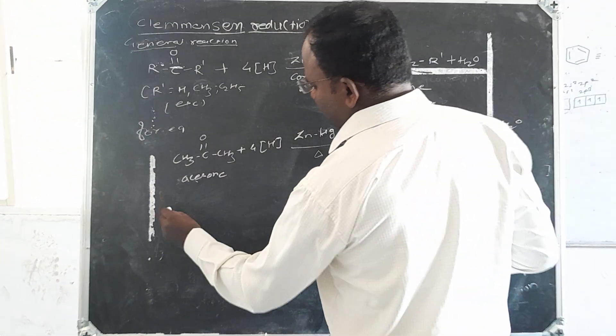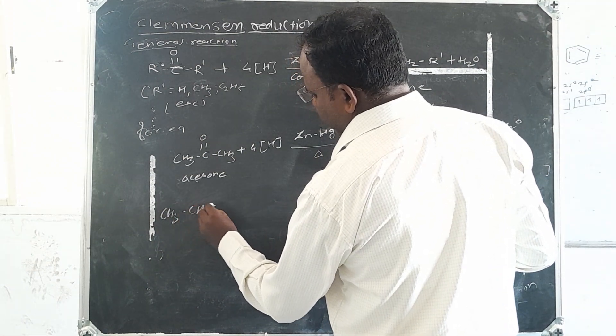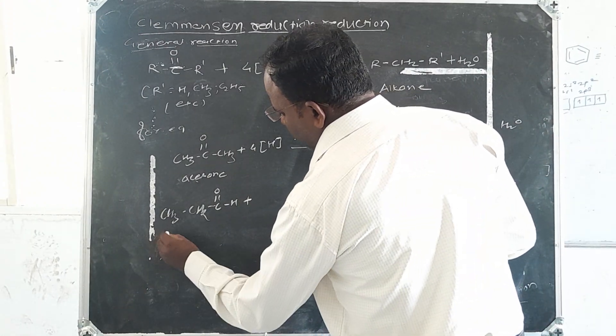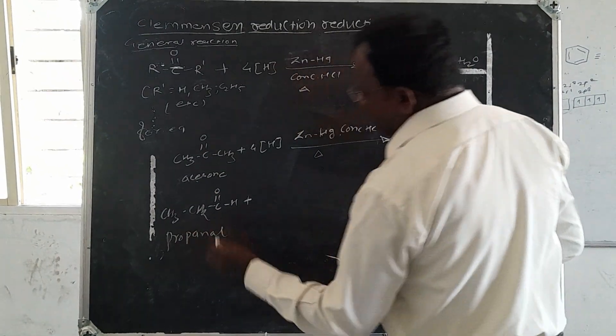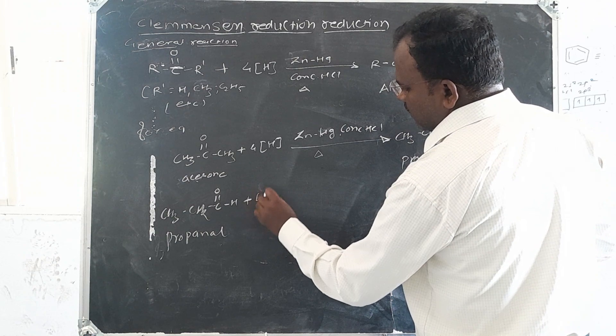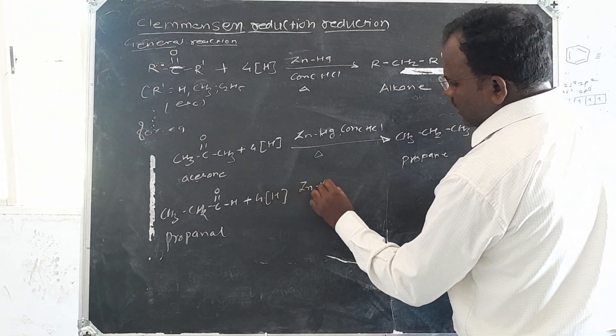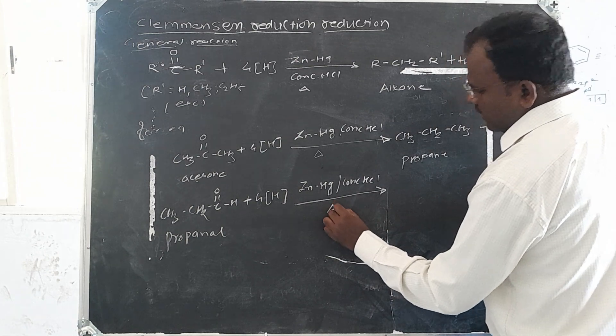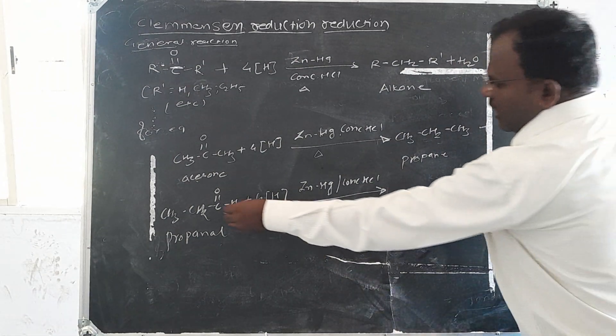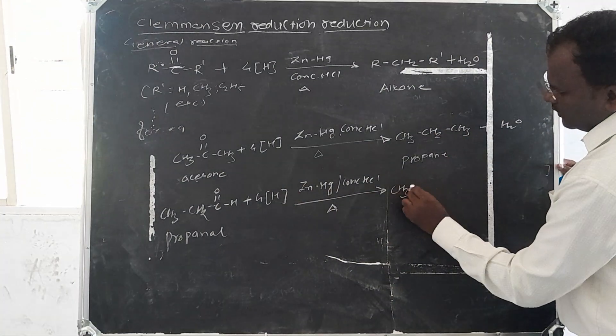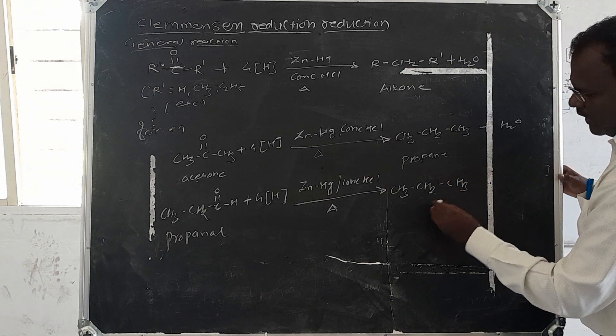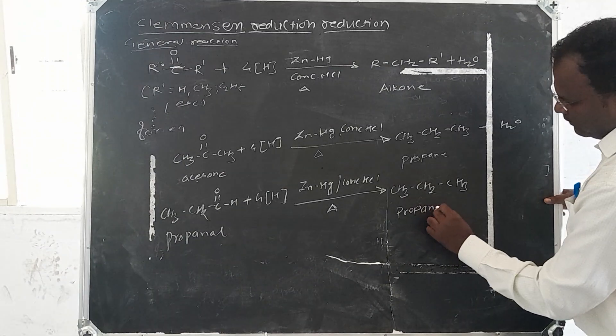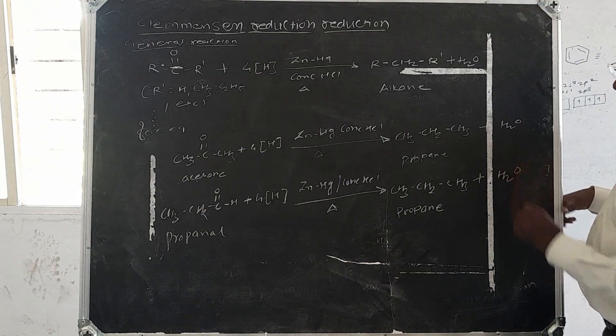If the aldehyde group is attached, the compound is propanal. It reduces to form the hydrocarbon. In this compound, the carbonyl group is reduced to form the hydrocarbon. The name of the compound is propane. So this is the reduction reaction.